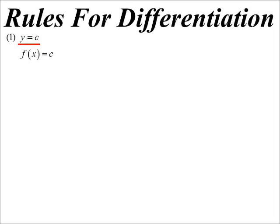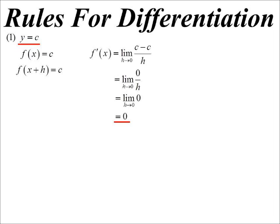So f(x) is equal to a constant, and therefore f(x+h) is also that constant. Throwing it into our derivative formula, we get constant minus constant over h, which is of course zero. So it does not matter — we're going to get zero every single time. This is our first rule: differentiate a constant number, we get zero.